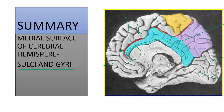We will continue with the sulci and gyri on the inferior surface of the cerebral hemisphere, and then see the functional areas of the cerebrum along with the blood supply of the cerebral hemispheres.